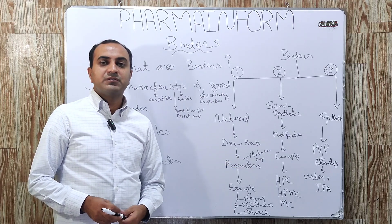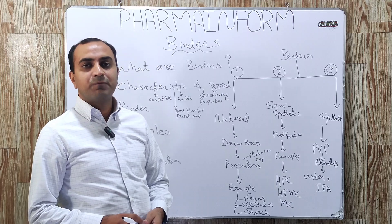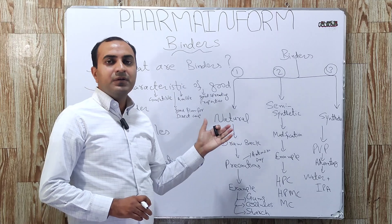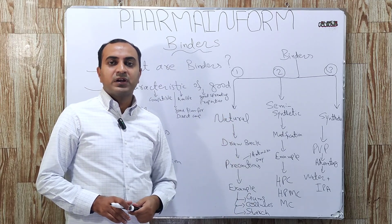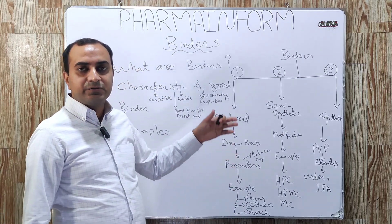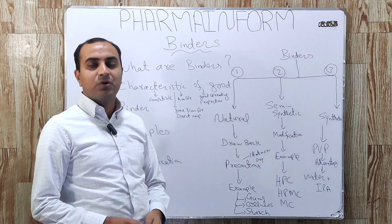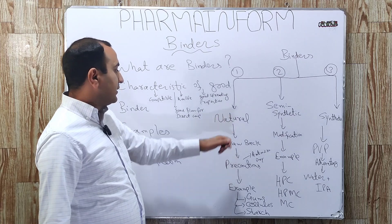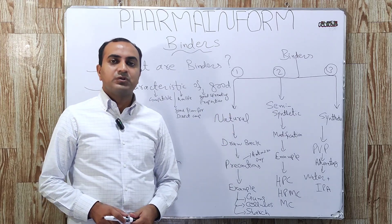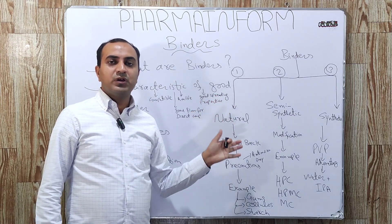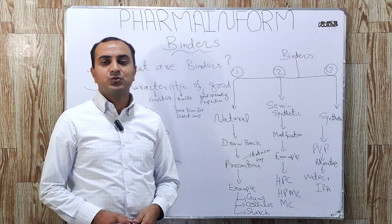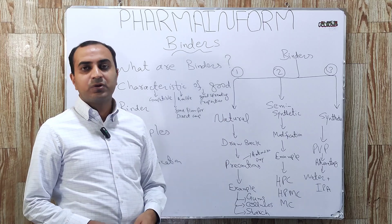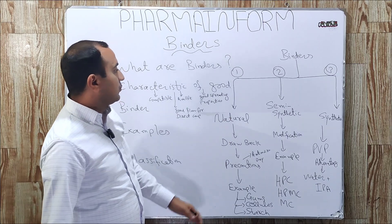As a precaution, we always completely dry the wet mass immediately after the kneading or granulation step. We can also add preservatives or antimicrobial agents to the formulation to prevent microbial growth. That is why today most formulations do not contain natural binders, because they are good promoters of microbial growth.